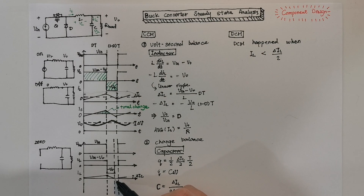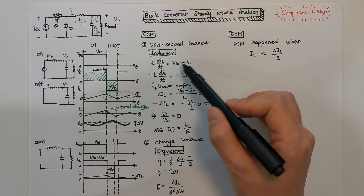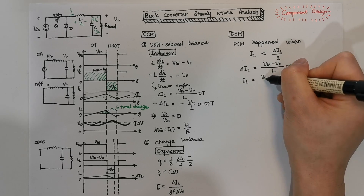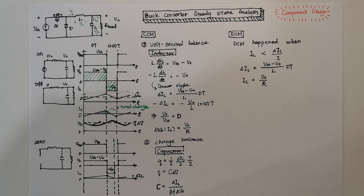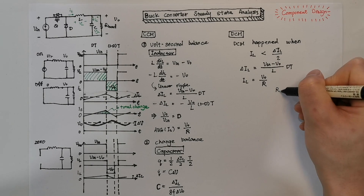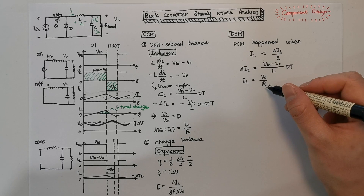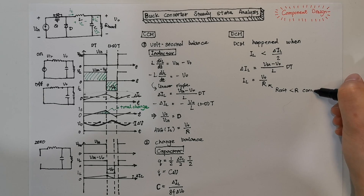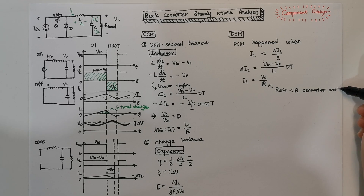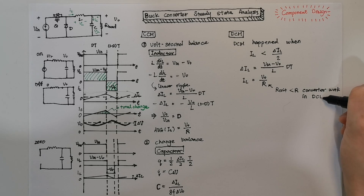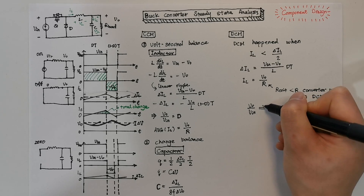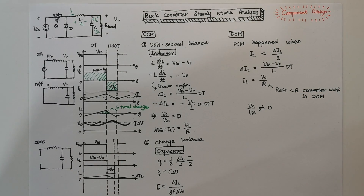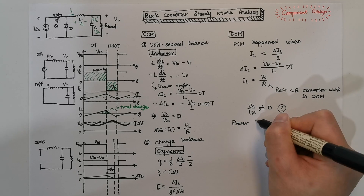However, we don't know when this zero period starts, so to calculate the current ripple in DCM we can only use the on-period equation. We can still use V_out divided by R to calculate the average inductor current. In some textbooks, there is a value called R_critical, which is the resistance calculated from this boundary condition. This means that any load resistance larger than R_critical can make the converter work in DCM. What is important in DCM mode is that the output voltage no longer follows the duty cycle equation we have in CCM. To find the duty-to-output-voltage relation, we use power balance.